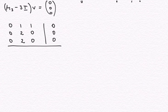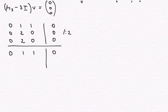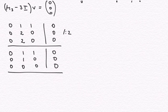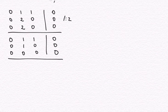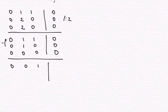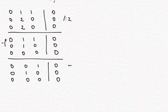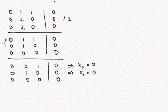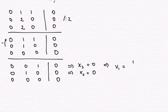Obviously the second and third rows contain the same information, so I can eliminate one of them. Dividing by 2, I get rows 0, 1, 1 and 0, 1, 0. Subtracting the second from the third eliminates the third row. I see that x3 equals 0, x2 equals 0, and x1 can be whatever it likes. So my eigenvector is given by (1, 0, 0).